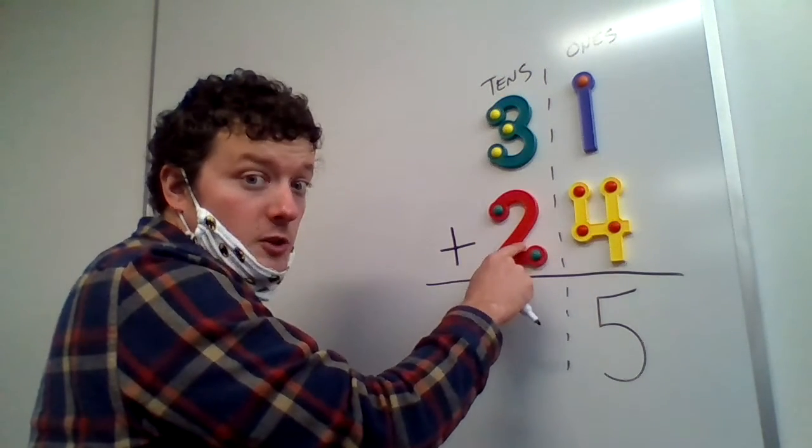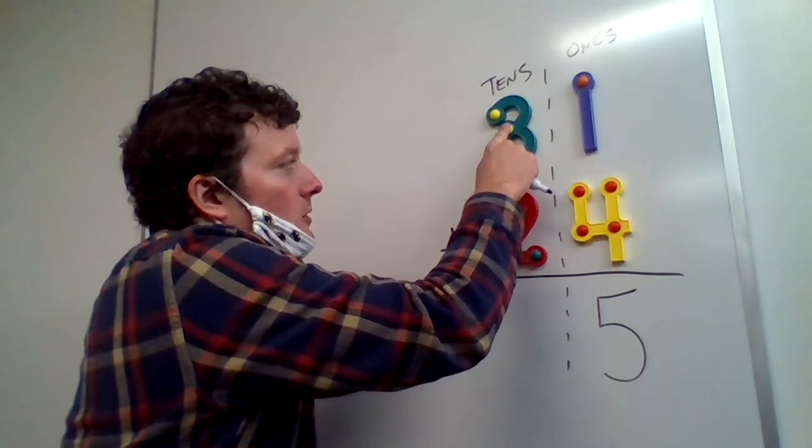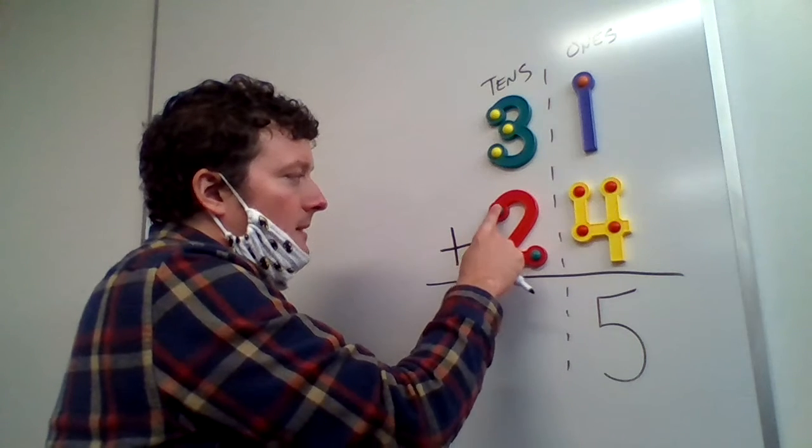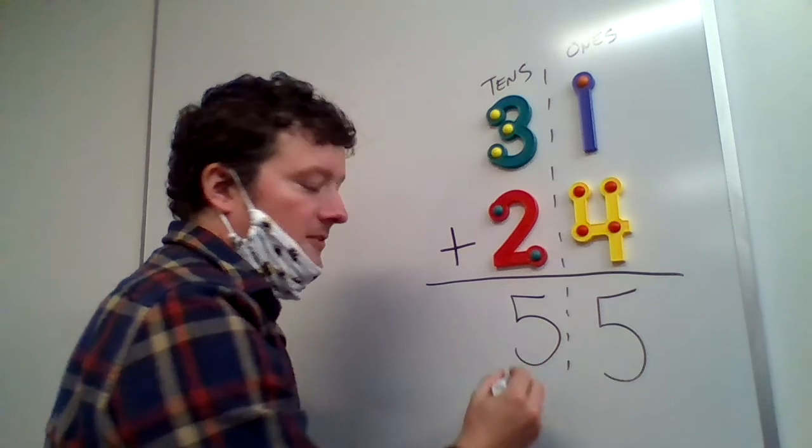So three plus two equals, I don't know. Let's find out. Let's hit the touch points. Ready? So one, two, three, four, five, three plus two is five.